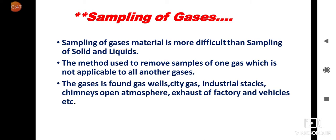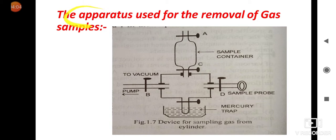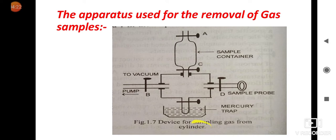Now we will see what apparatus is used to collect the gas sample from the gas cylinder. This is the apparatus used for the removal of gas samples — this is the figure of the device for sampling gas from the cylinder. In this figure, A, B, C, and D are the stopcocks or valves of this apparatus. This part is called the sample container, where you can store the gas sample.